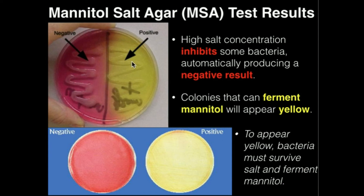In order to grow on MSA, you have to meet two conditions. One, you have to first be able to survive the high salt concentration. Two, you have to be able to ferment mannitol, because that fermentation is what produces the yellow color. Make sure to watch the demonstration on mannitol salt agar, and in the next video we're going to discuss the catalase test.